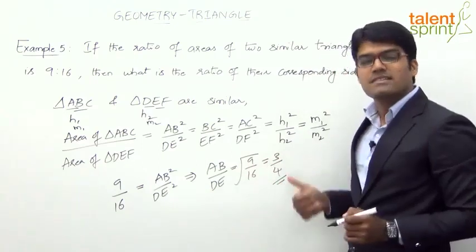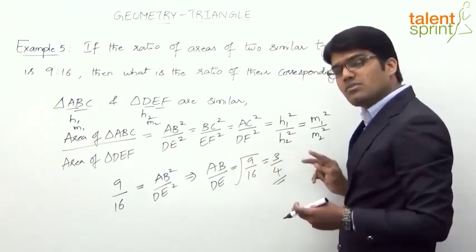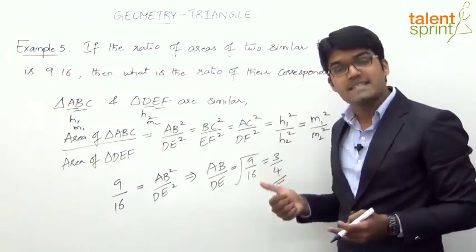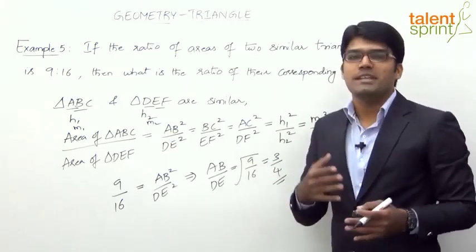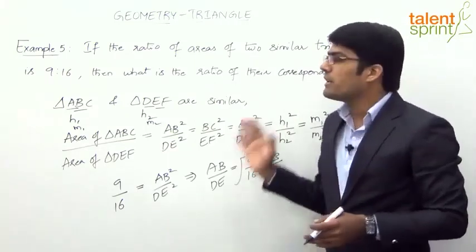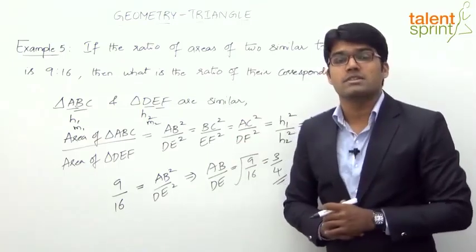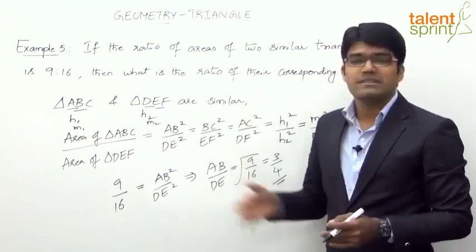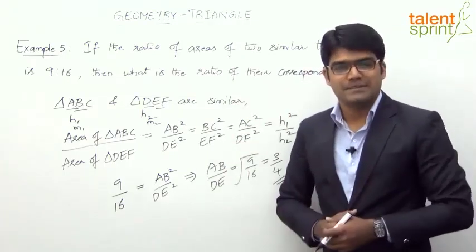So 3 is to 4 is the ratio of their corresponding sides. It is also the ratio of their corresponding heights and the ratio of their corresponding medians. That is one important point on similar triangles which helps us solve these types of questions very easily.